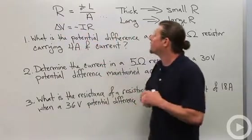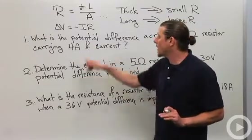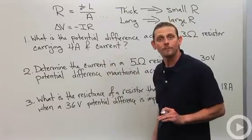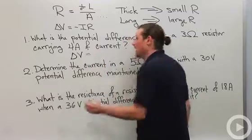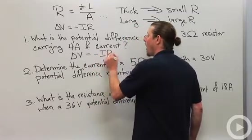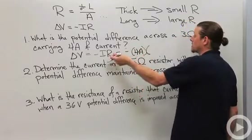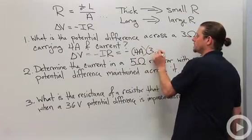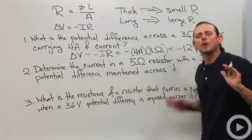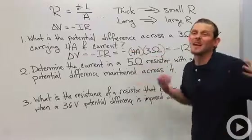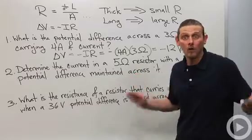Let's do some problems. What is the potential difference across a 3-ohm resistor that carries 4 amps of current? Applying Ohm's Law directly: potential difference equals minus IR. The current is 4 amps and the resistance is 3 ohms, so the potential difference is minus 12 volts. Since everything is in SI units, we don't need to worry about unit conversions — the answer is in volts.